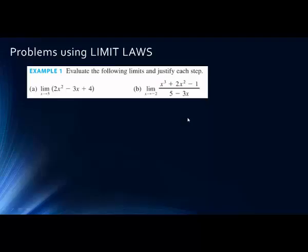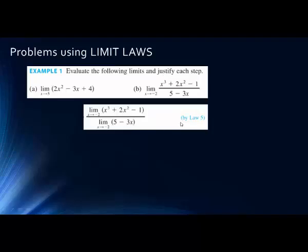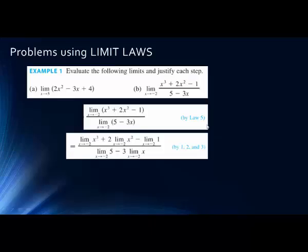Let's look at example b: the limit as x goes to −2 of (x³ + 2x² − 1) divided by (5 − 3x). Remember that when we have the limit of a quotient, this equals the quotient of the limits — rule number 5. So we can take the limit of the numerator and the limit of the denominator. But remember there's a rule that says we can only do this if the denominator will not equal zero. If we plug in −2 for x, the denominator will not equal zero, so this is allowed.